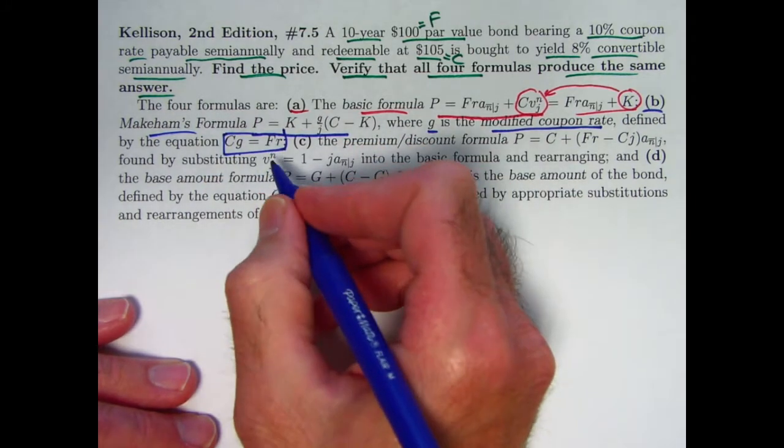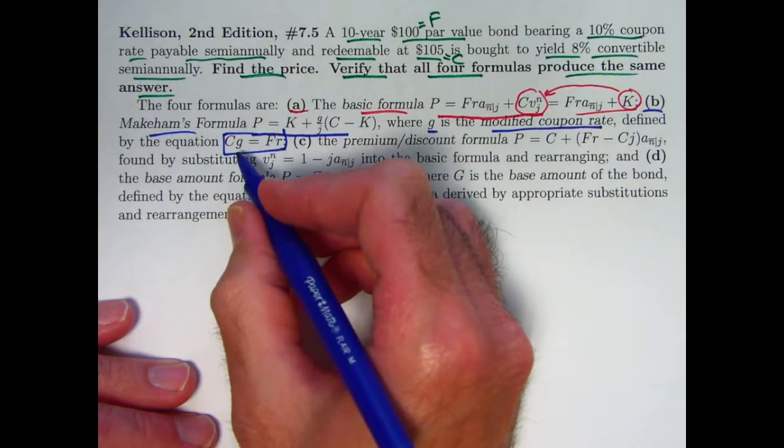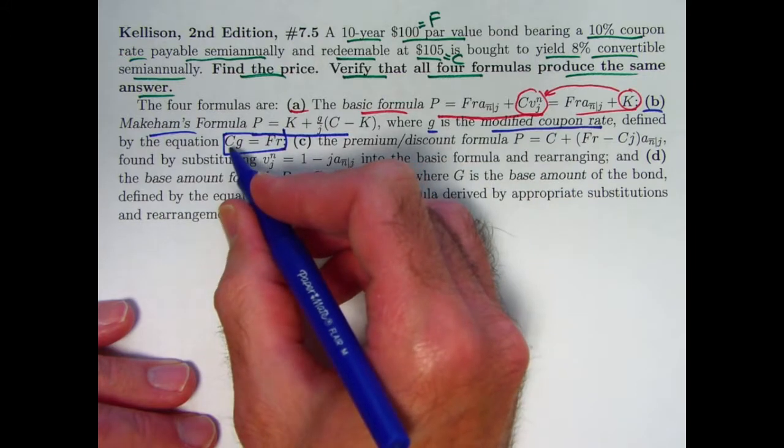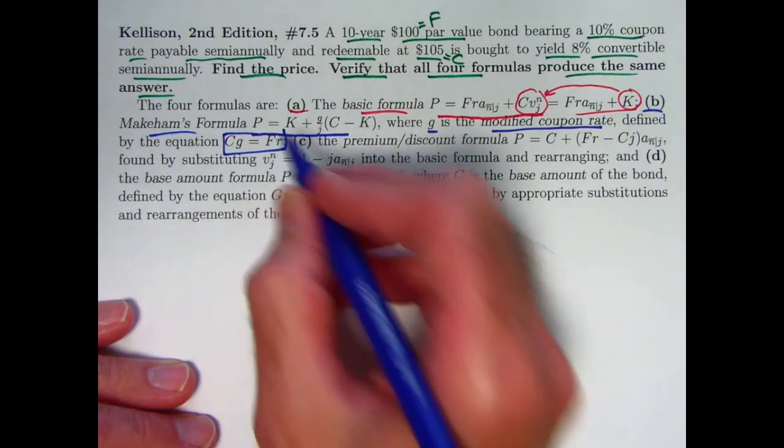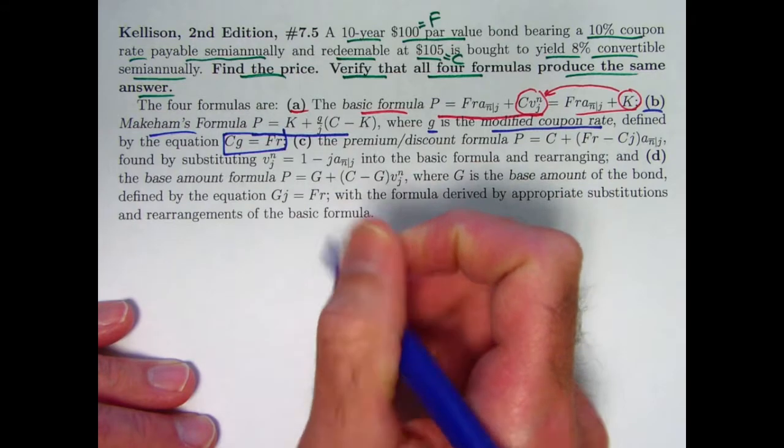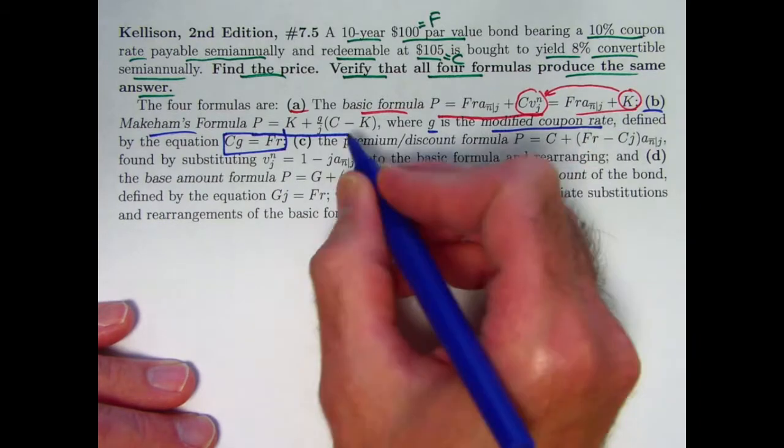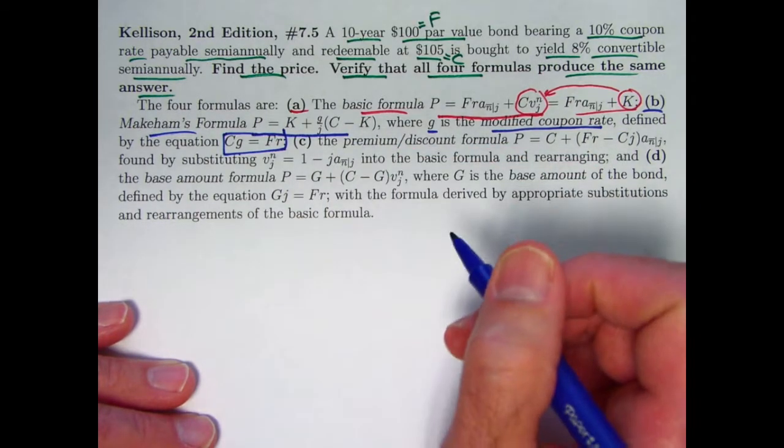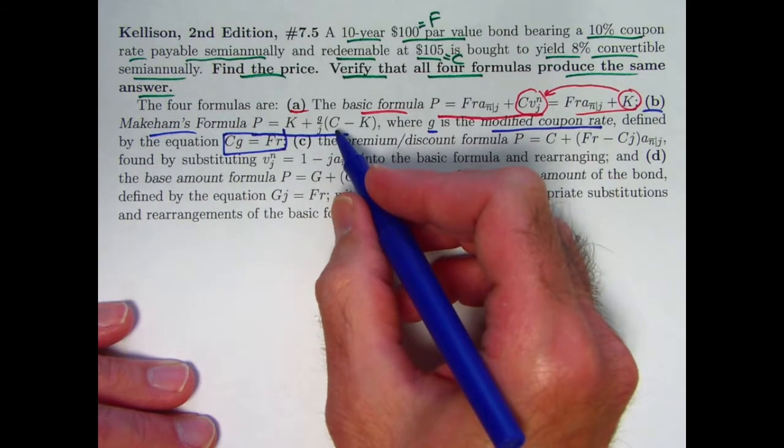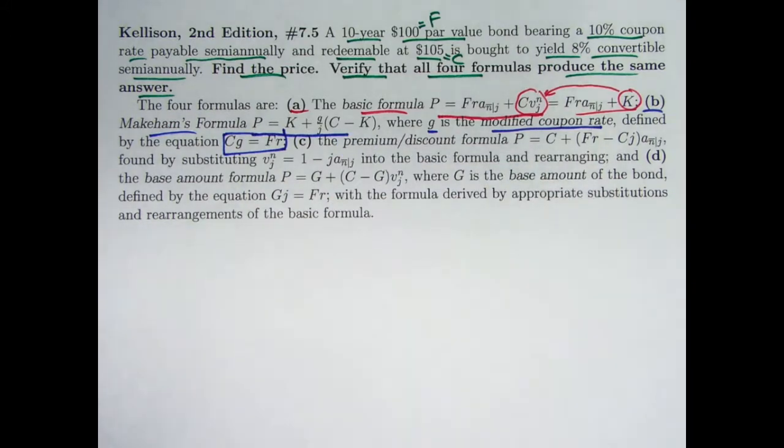C times G should equal F times R. Take this modified coupon rate times the redemption amount to get the coupon amount F times R. K, again, is the same thing as it was over there. It's the present value of the redemption amount. Again, G is this modified coupon rate. J, again, is the semi-annual yield rate. That formula can be used to find the price.